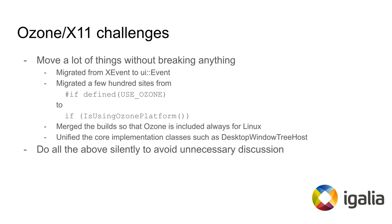Half a year ago, in autumn 2020, we made a tiny change in the GN files that enabled Ozone in desktop builds of Chromium for Linux. That happened almost unnoticed, like we had planned.